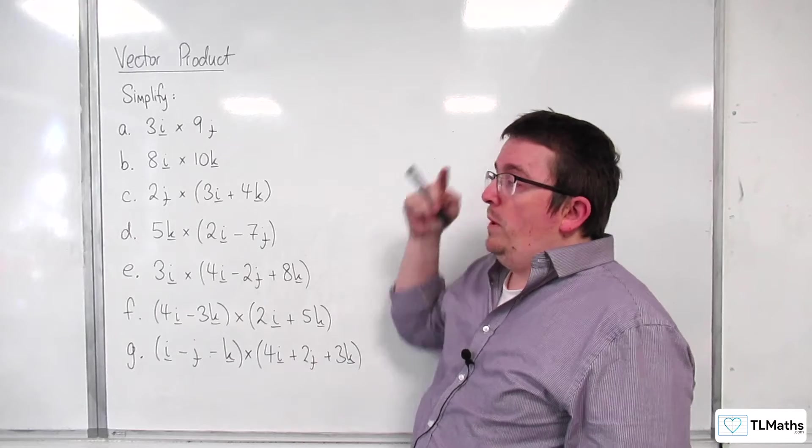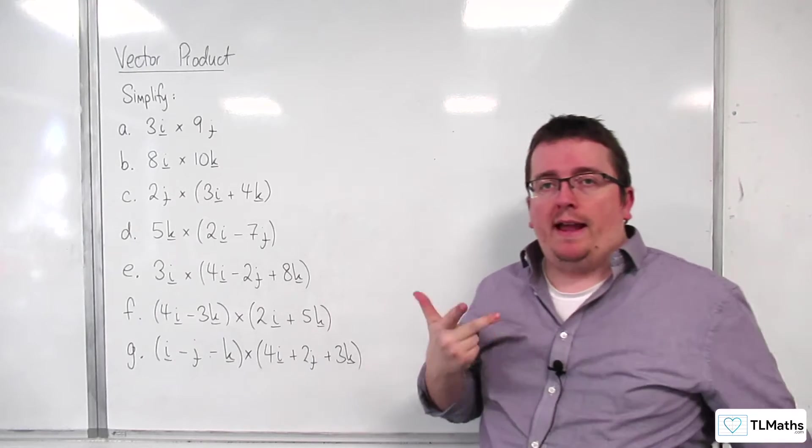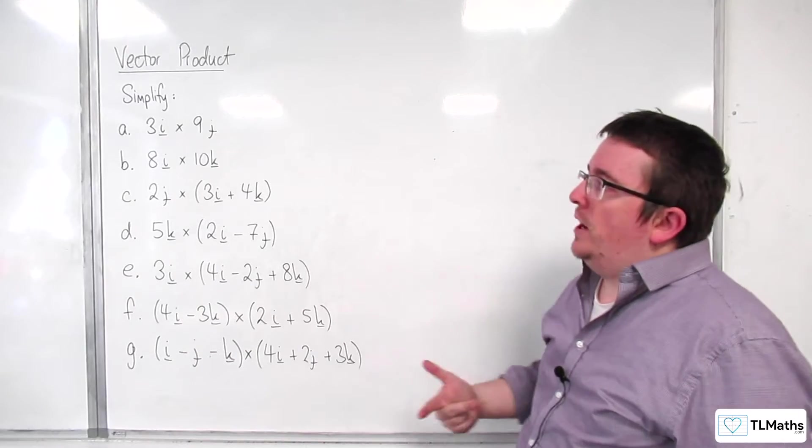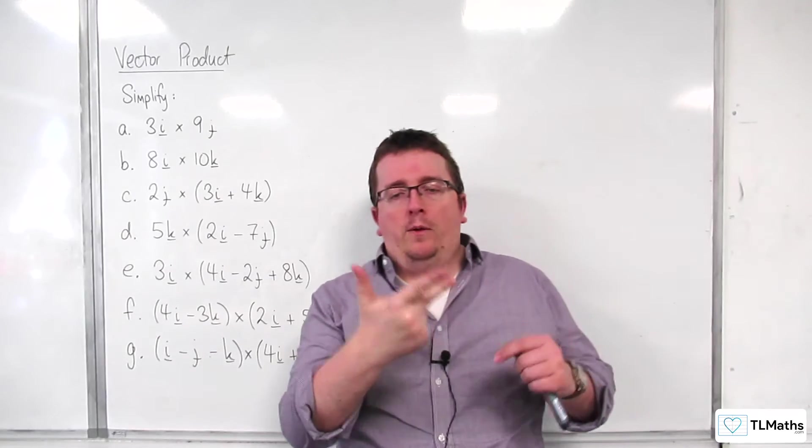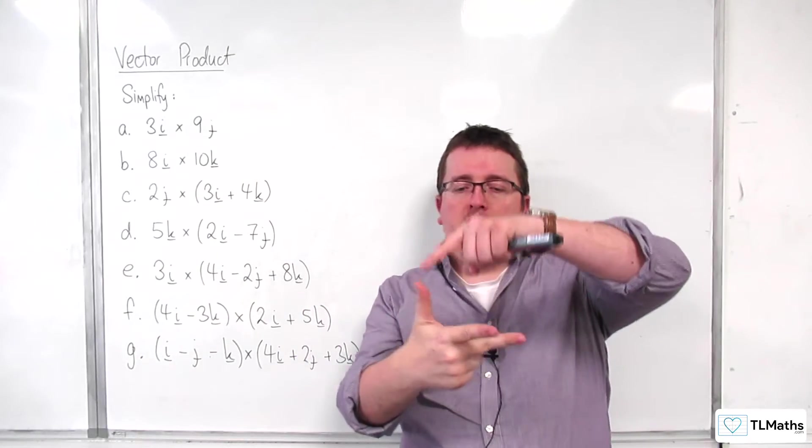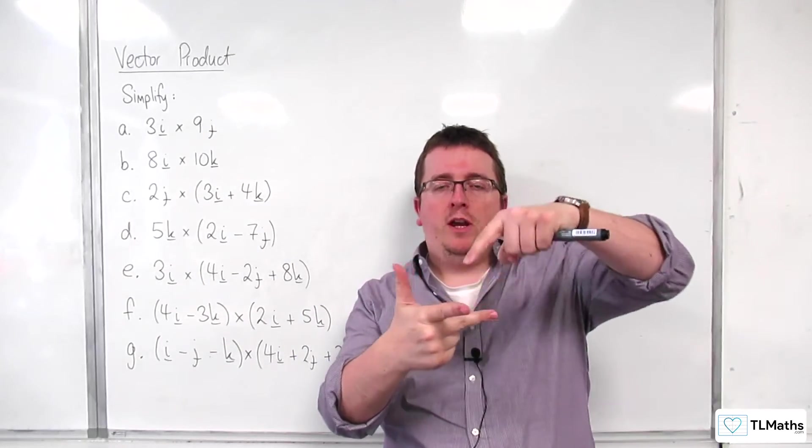Now, what we previously saw was that right-hand rule with i, j, and k. So, with the right-hand thumb, next finger, next finger, i, j, k.